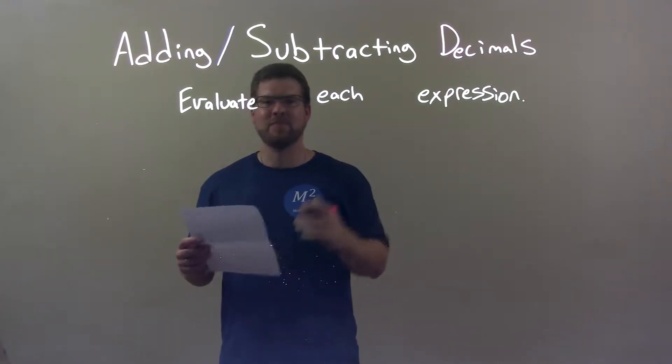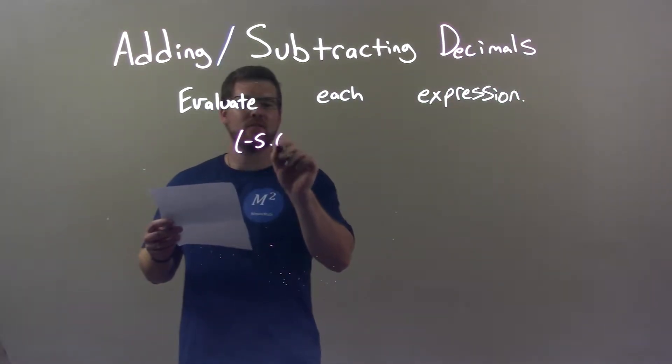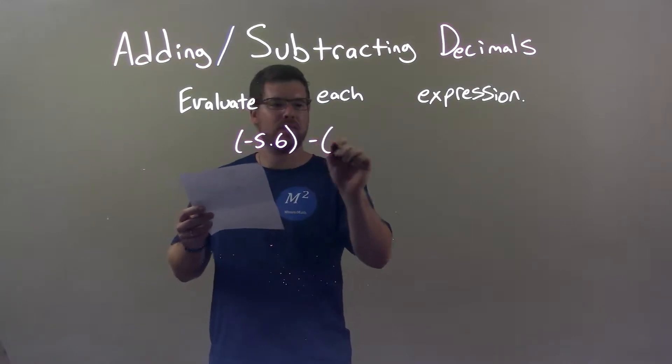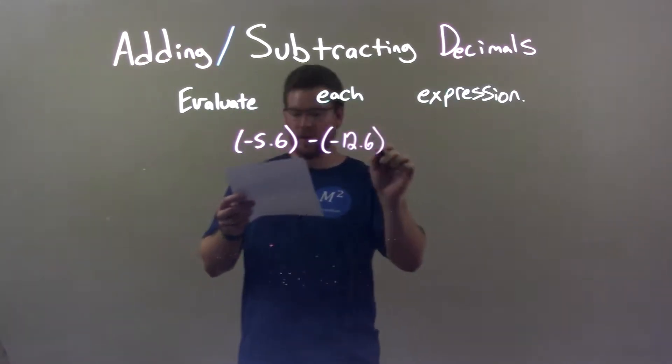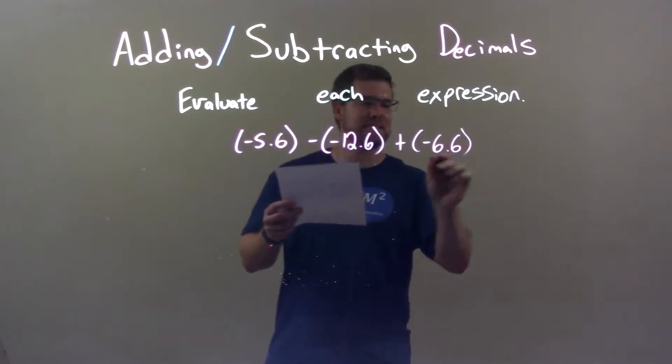So if I was given these decimals, negative 5.6 minus a negative 12.6 plus a negative 6.6.